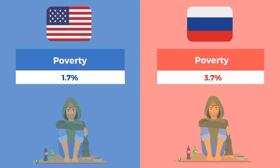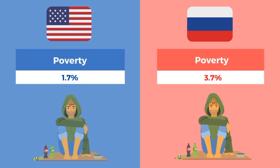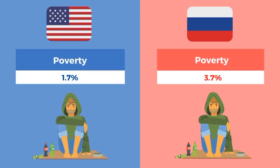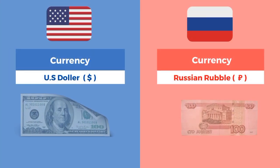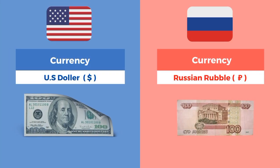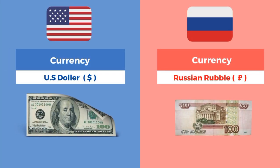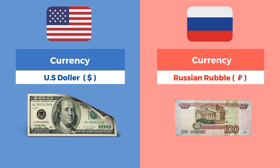The US poverty rate is 1.7% of the population and Russia's poverty rate is 3.7% of the population. The US currency is the US dollar and the Russian currency is the Russian ruble.